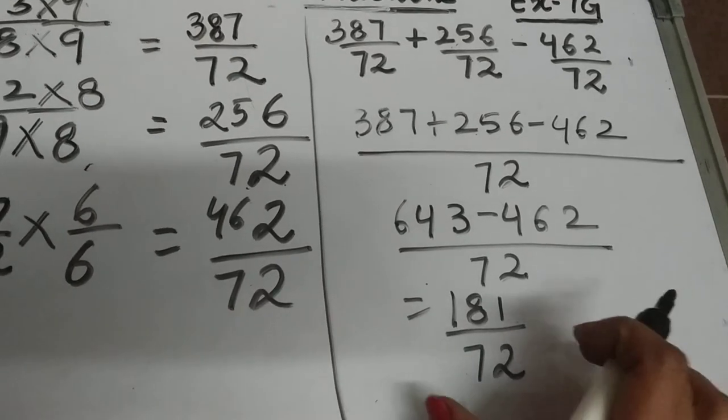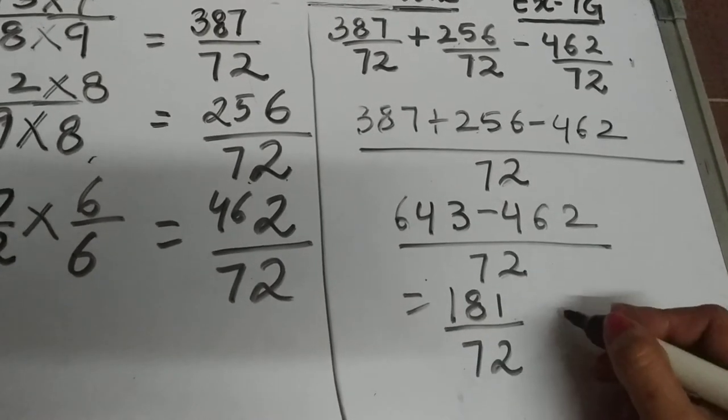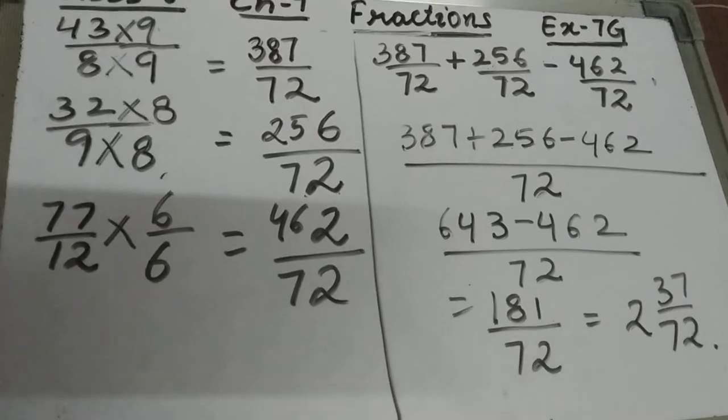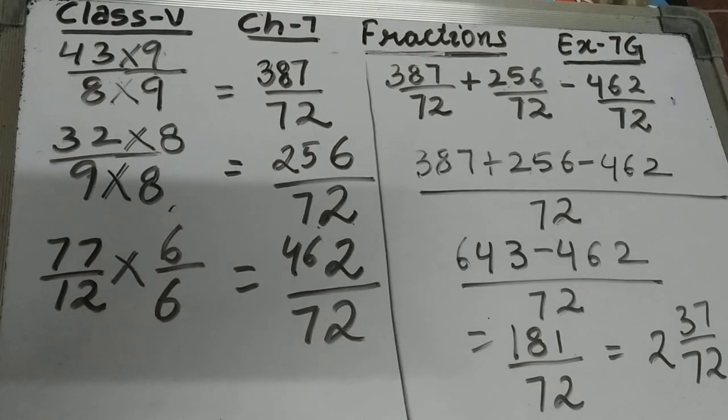Now convert it into a mixed fraction. This will become 2 37/72. So this is question number 9 of exercise 7G.